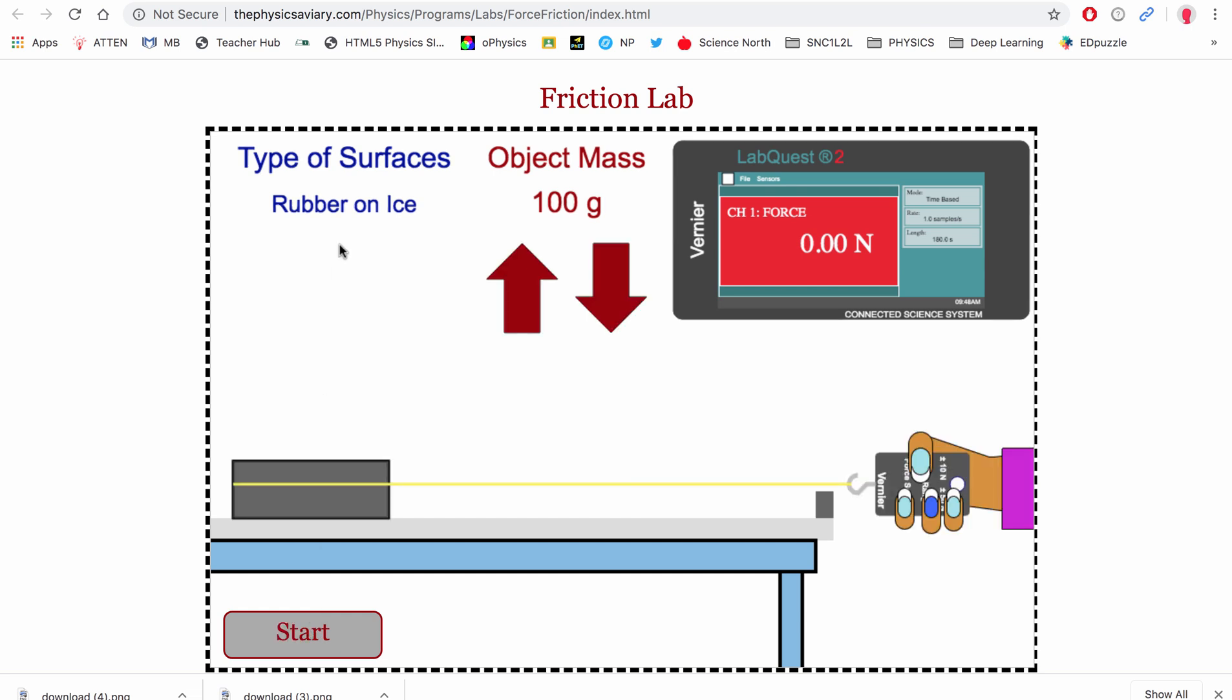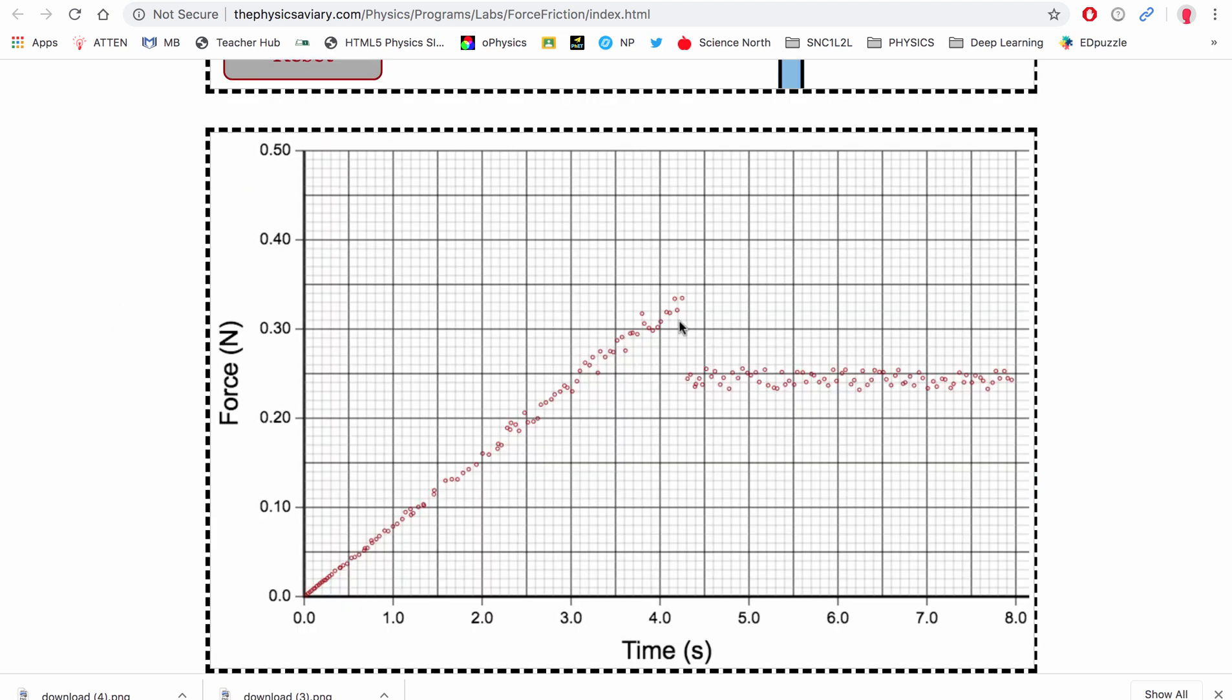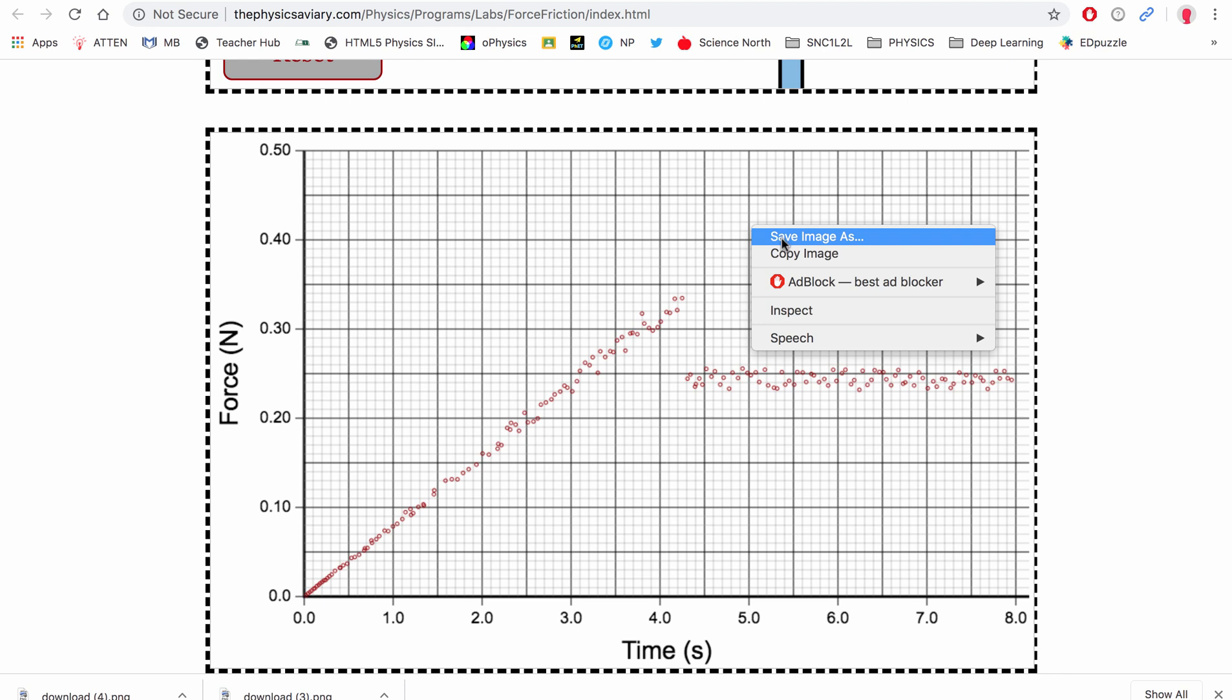If we click reset, we can go and change, and this is aluminum on steel. Again, this is still for the 100 grams. And we click start. And the force increases until we can move it in uniform motion. The shape of the graph is always going to be the same. Diagonal line, there's a peak. The peak represents the static friction that we've overcome. In this case it looks like the static friction is around 0.34. Then it drops off to the kinetic friction, which in this case looks like it's around 0.25. And again we save this and we will call it 100 grams aluminum on steel.